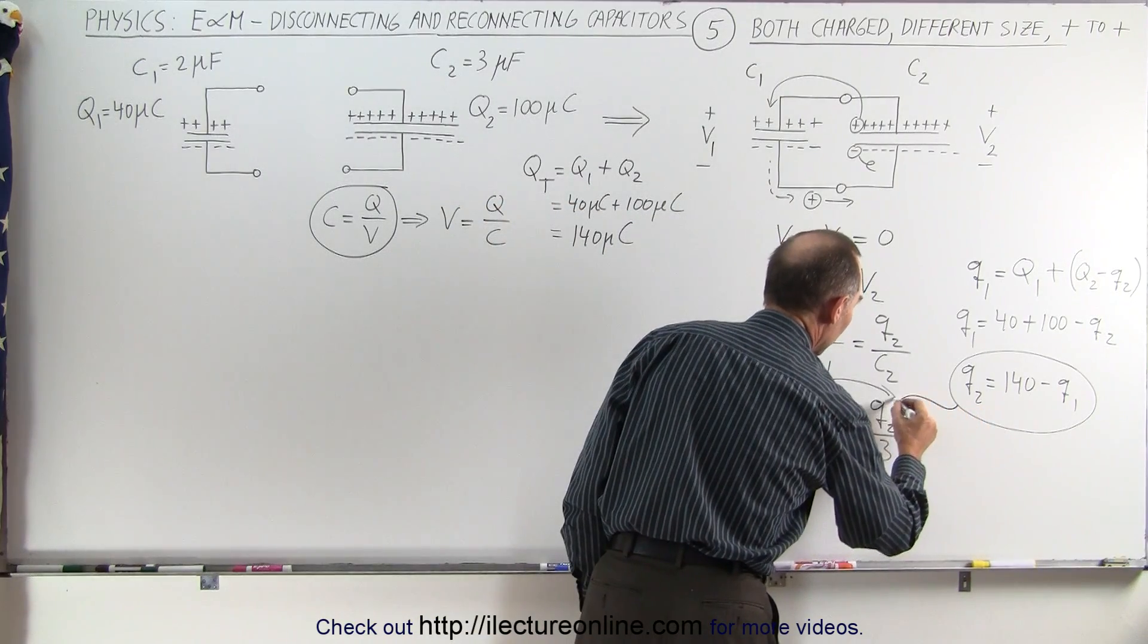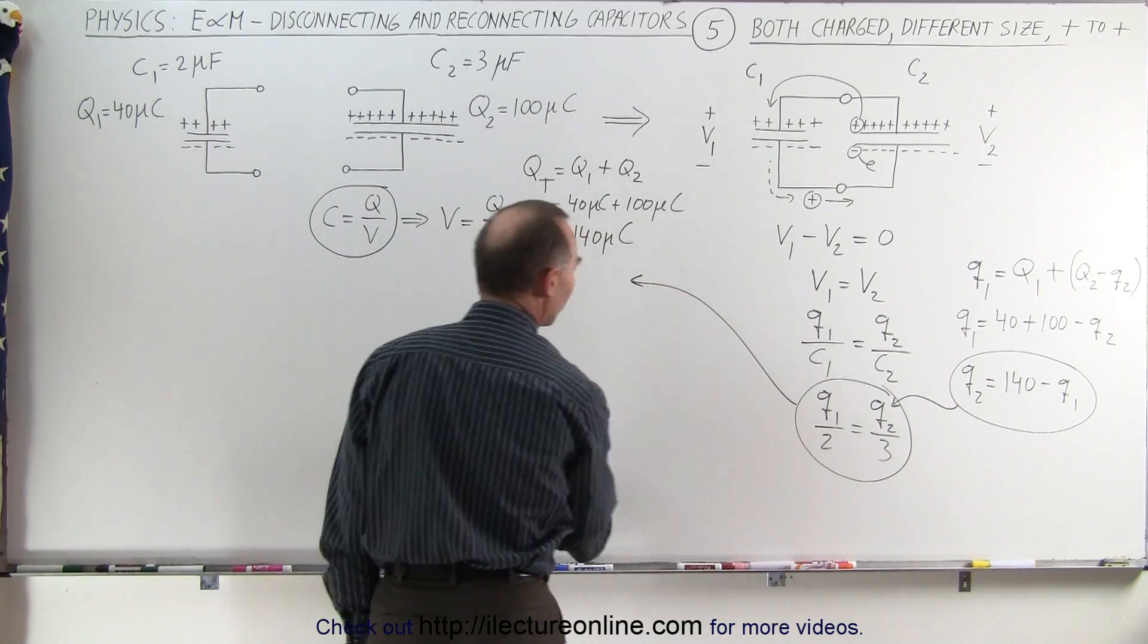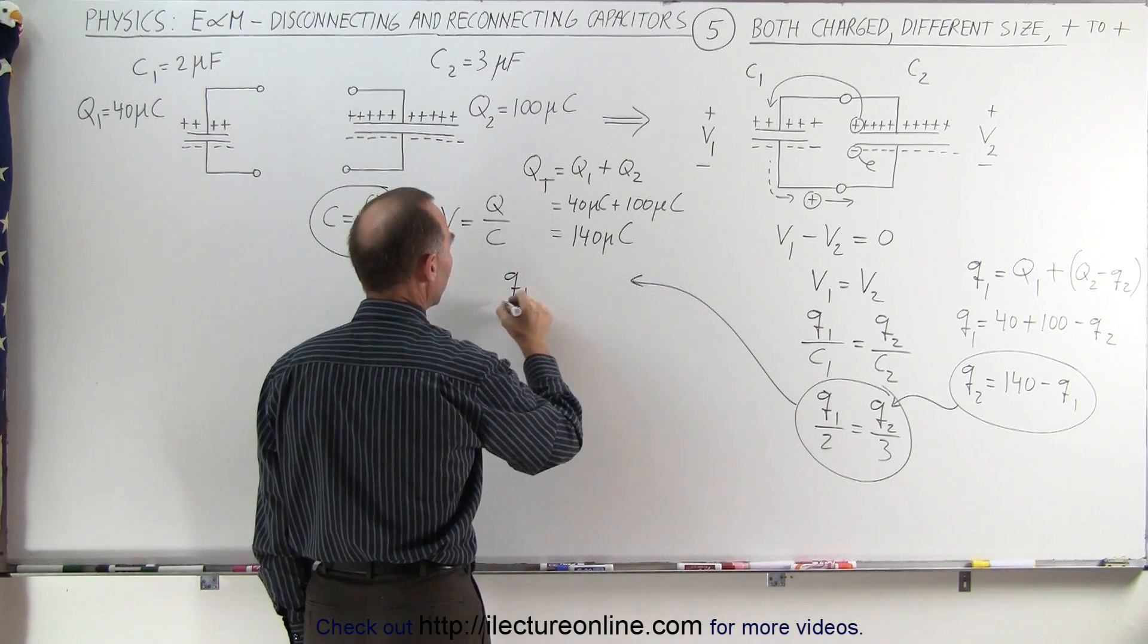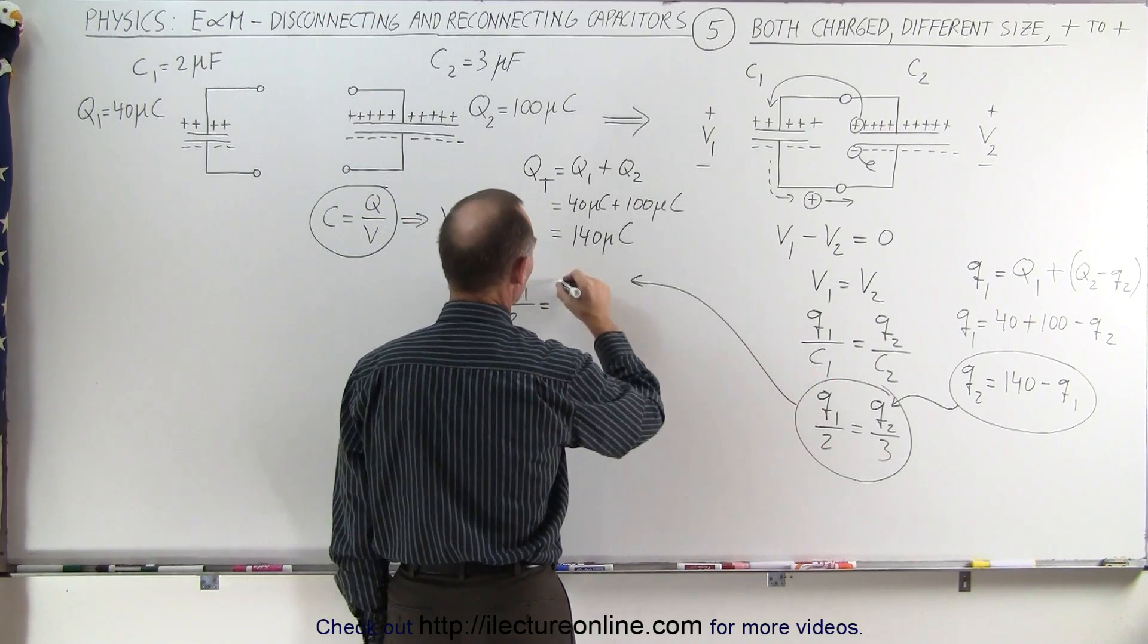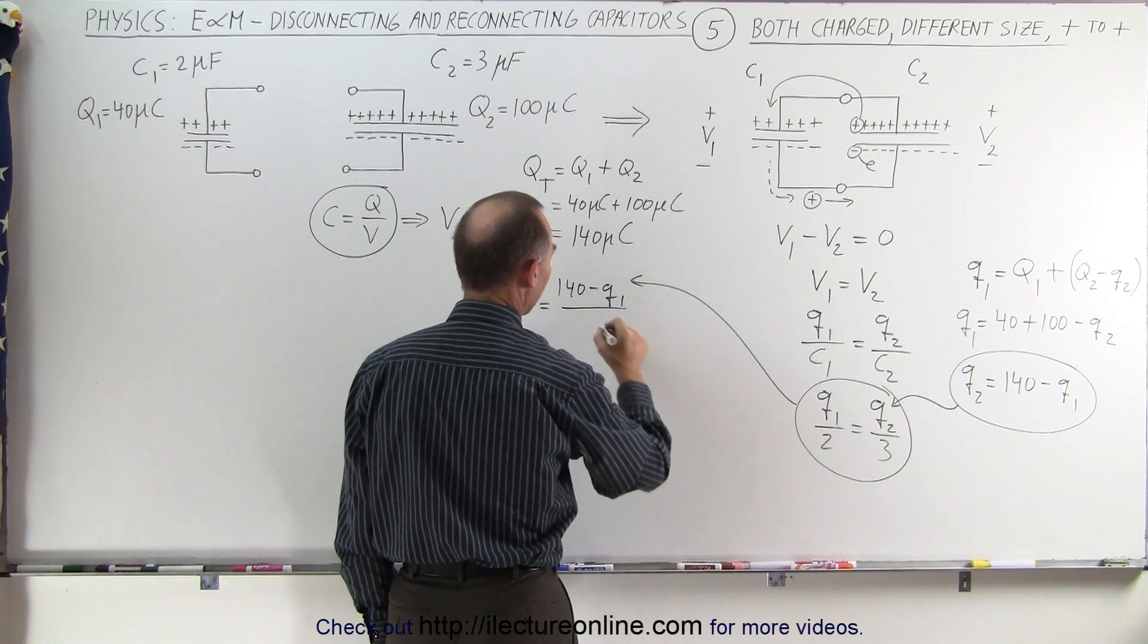I'm going to plug this q2 in the equation over here. So moving this equation this way, I can now write that q1 divided by 2 is equal to q2, which is 140, minus q1, divided by 3.